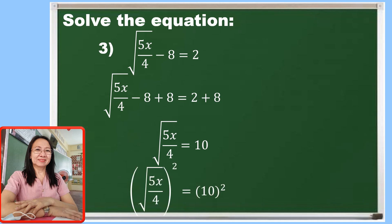Then, getting the square of both sides, the square root of 5x over 4 squared is 5x over 4, and 10 squared is 100. Now, by cross multiplication, we can simplify the equation into 5x is equal to 400. To simplify further, let us divide both sides by 5, so that 5x divided by 5 is x and 400 divided by 5 is 80.